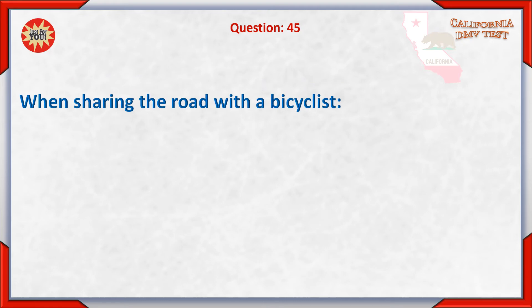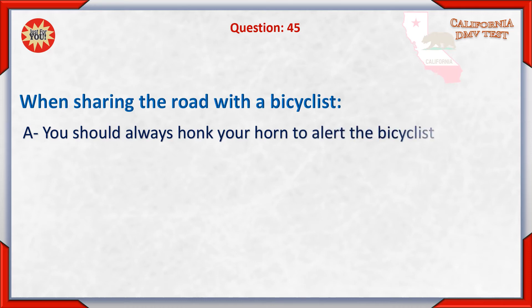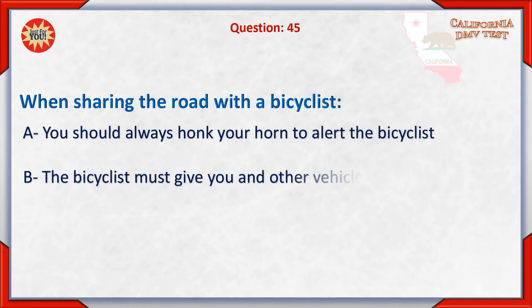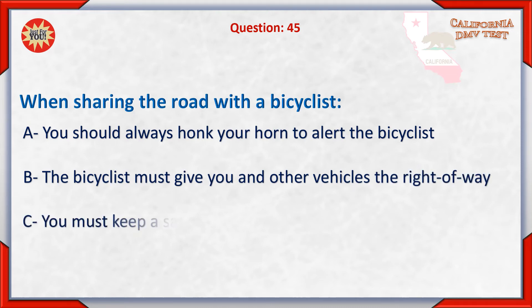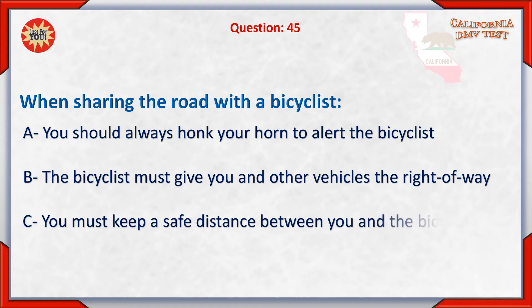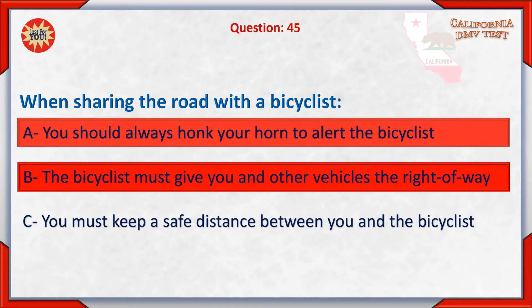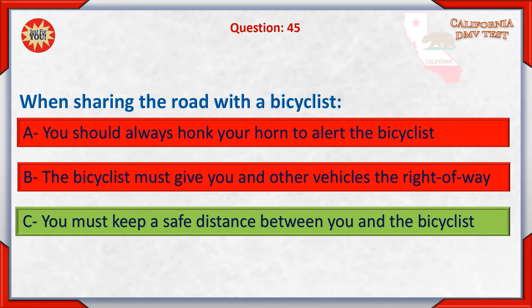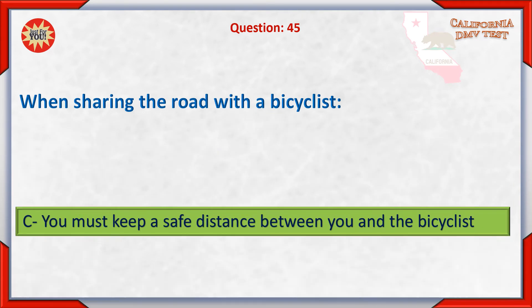Question 45. When sharing the road with a bicyclist: A. You should always honk your horn to alert the bicyclist. B. The bicyclist must give you and other vehicles the right of way. C. You must keep a safe distance between you and the bicyclist. The correct answer is C.